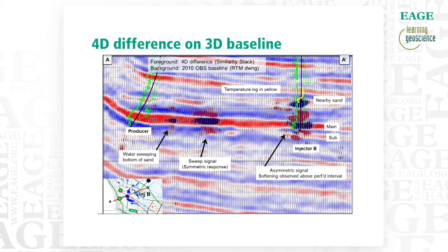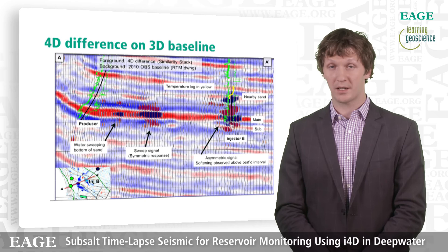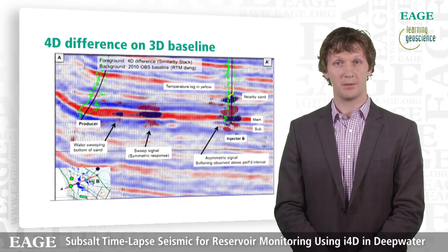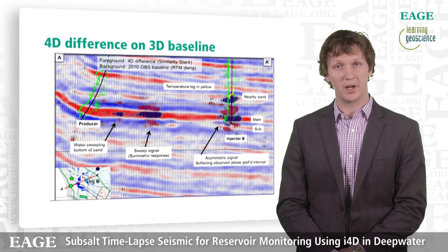Combining all these data, we decided to shut in the well and have planned to re-drill it in the future. Moving to the sweep signal, it's a nice symmetric sweep both above and below the reservoir, suggesting homogeneous sweep within the reservoir from top to bottom. With I4D, we lose no quality on the vertical scale — so you can also see hardening on the bottom of the reservoir but not on the top, confirming we have the vertical resolution expected from a full field ocean bottom node survey with I4D.